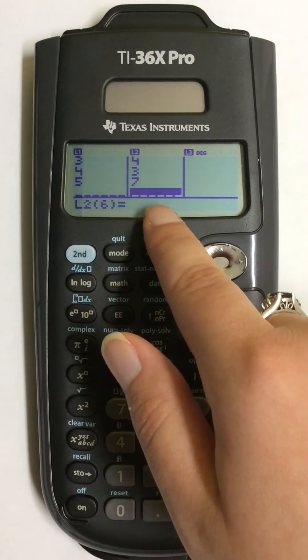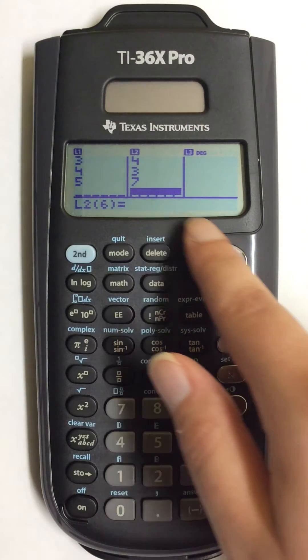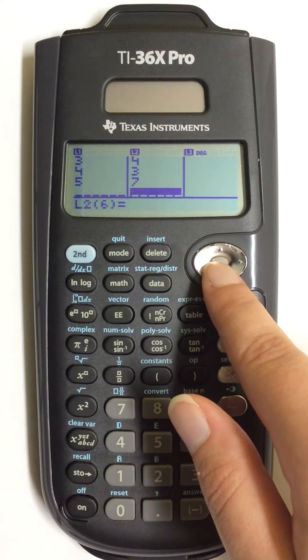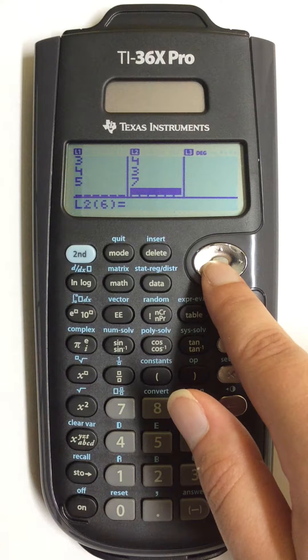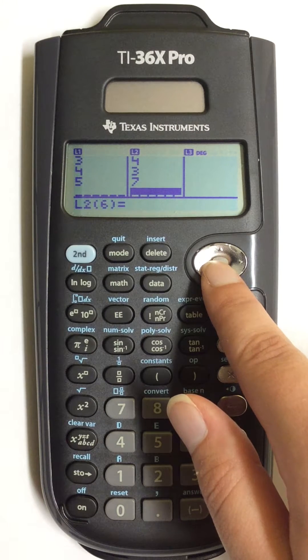If they don't match, just go back through your lists using the arrows to check your data and edit as needed.